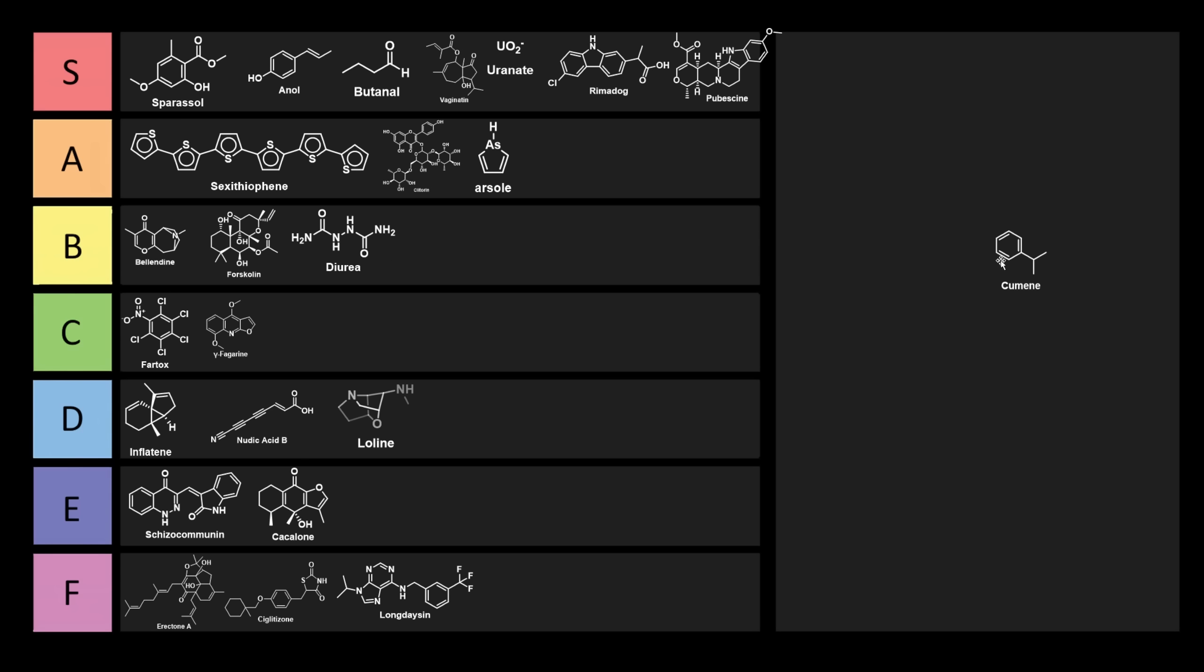Now last but not least, we have cumene, also pronounced as cumin. Cumin is a derivative of cumic acid, and cumic acid was originally discovered in cumin, the powder, and as a consequence, that's where it gets its name.